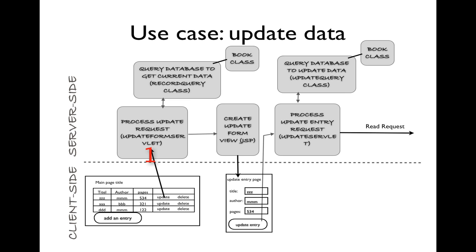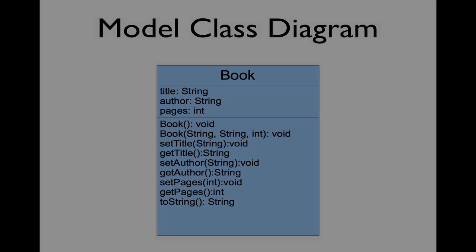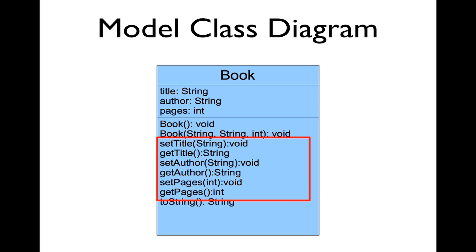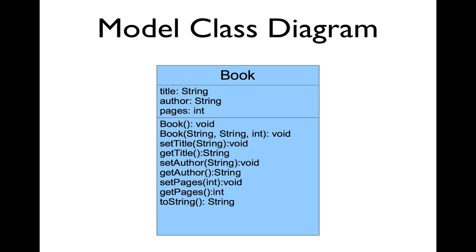For this use case, we'll need to create five additional components. This class diagram illustrates a Book class corresponding to the table in our database. We'll have title, author, and pages as fields, two overloaded constructors — one that takes title, author, and pages, and one with no parameters — plus getters and setters for each instance variable and a toString method. We'll use this class when we create, read, update, and delete books in our book database.